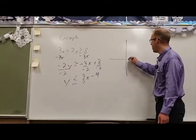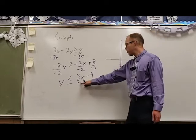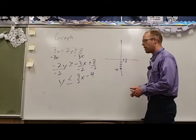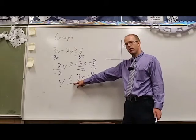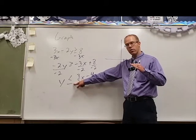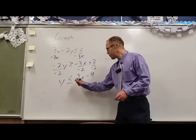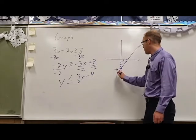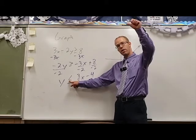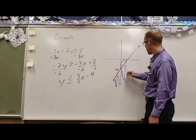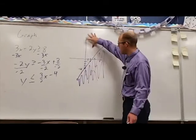Let's graph that. Our y-intercept is at negative 4, and our slope is 3 over 2, so we go up 3 and over 2, then draw the line. Before I draw it, I decide: dashed or solid? In this case we're allowing it to be equal, so the line itself works — I make it solid. If the equal sign were not there I would make it dashed, but it is there so we keep it solid. Then we decide: shade above or below? Our y values are smaller, and smaller y values are found below, so we shade underneath the line. Everywhere underneath works, and the unshaded area does not.